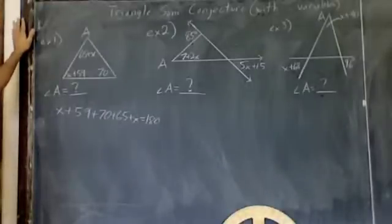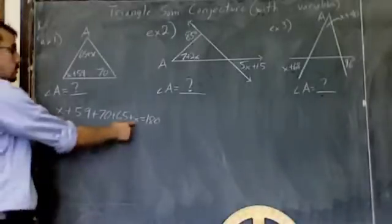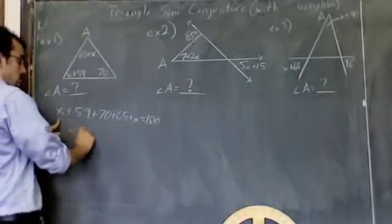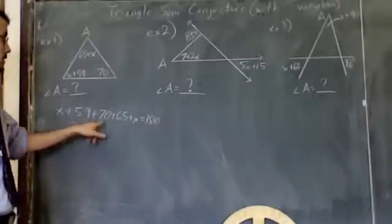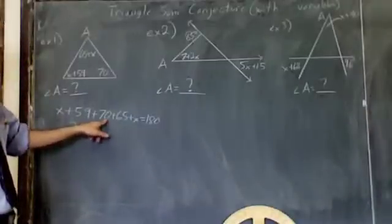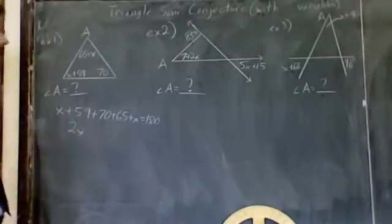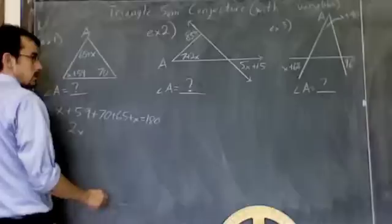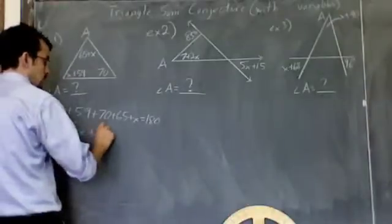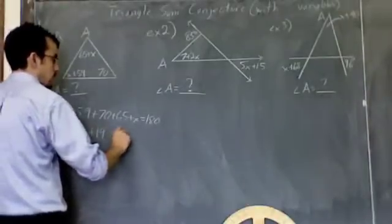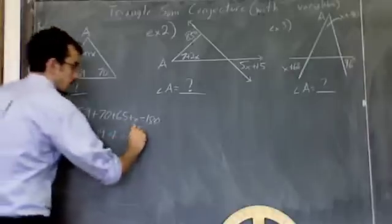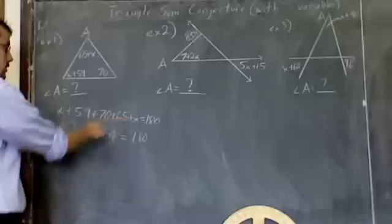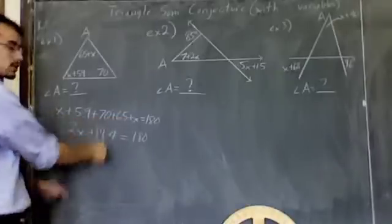After you do that, all you have to do is combine like terms. I see 1x and 1x, that's 2x. I see 59 and 70, that's 129. 129 plus 65 should give me 194. And then that should equal 180. I combine my x's to get this, combine these three to get this.